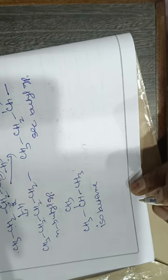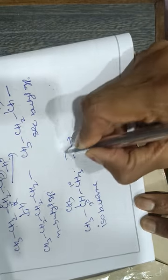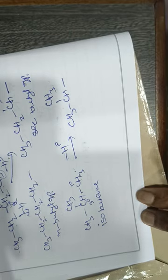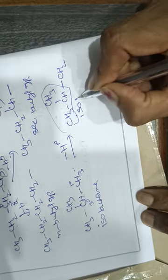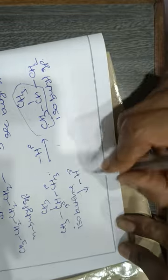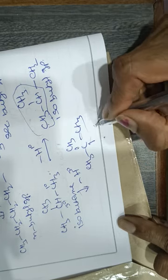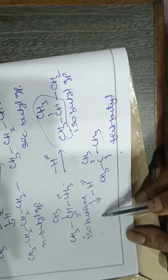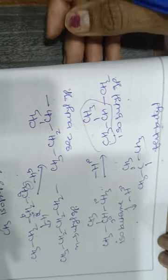From isobutane — which has the iso arrangement — if we remove a hydrogen from the primary carbon, we get the isobutyl group. If we remove a hydrogen from the central tertiary carbon of isobutane, we get the tertiary butyl group. So from isobutane we get isobutyl group and tertiary butyl group, and from normal butane we get normal butyl group and secondary butyl group.